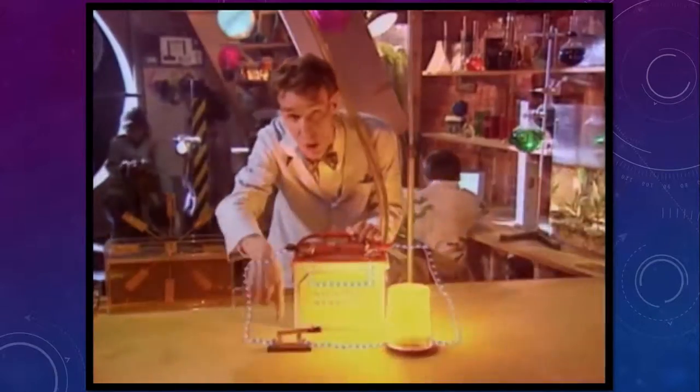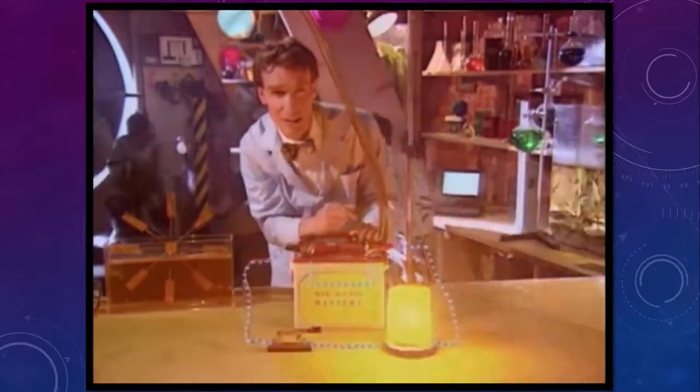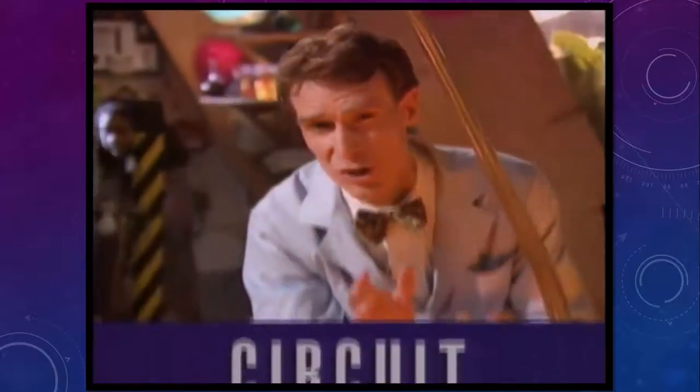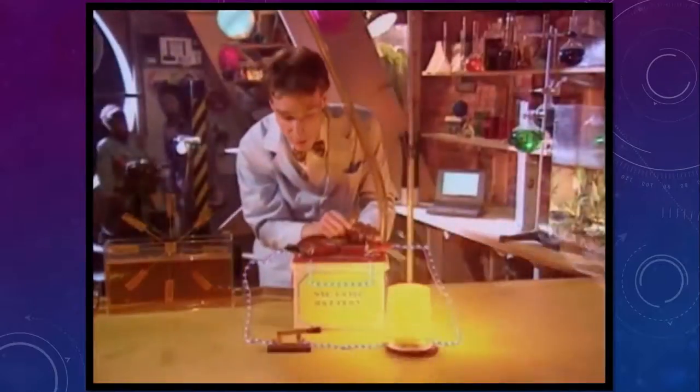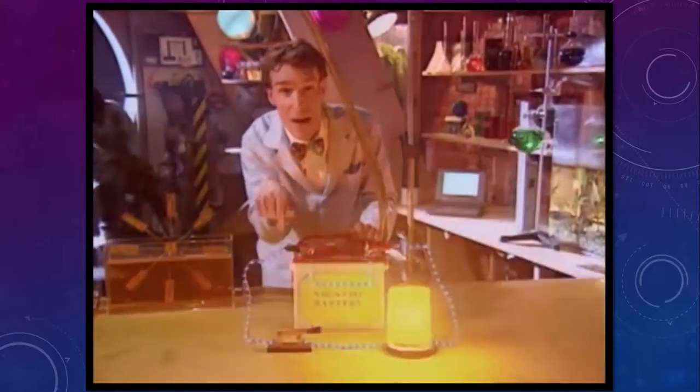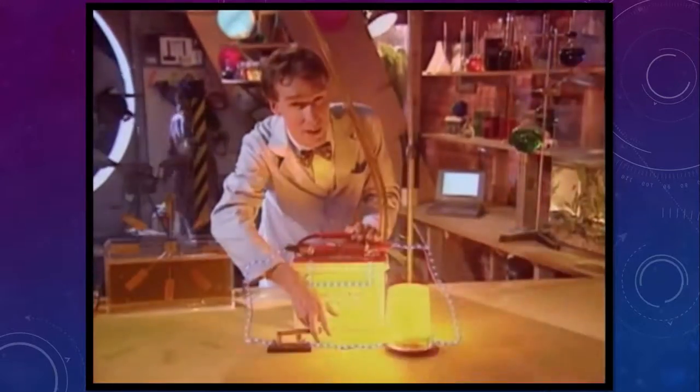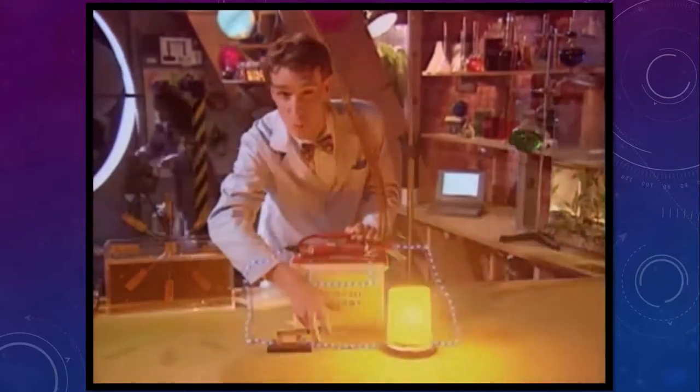They're flowing in a closed path, what scientists call an electrical circuit. Now, circuit, that's from an old word for go around. So electrons, right now, can go around an electrical circuit. The flow of electrons is a lot like the flow of water.